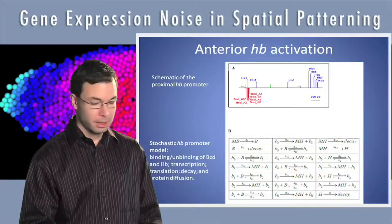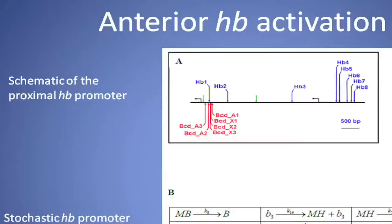The hunchback promoter is upstream of the start site for hunchback transcription. There's a core promoter region, proximal promoter, which has six known bicoid binding sites that have been known for quite a while, and two hunchback self-regulatory sites. The hunchback protein actually binds back on itself and there's a self-regulatory feedback cycle here. You can make constructs in the lab which have this region between the green arrows and will form the characteristic anterior step pattern expression of a hunchback-like expression pattern. We use this anterior region, about 1,500 base pairs, as the basis of our model.